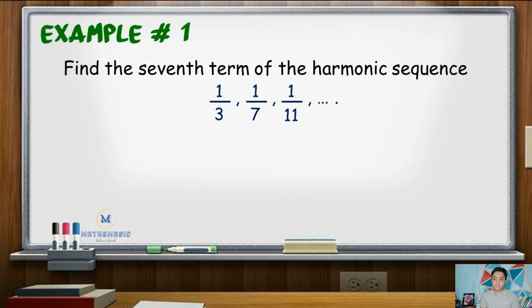This item can easily be solved by applying the concept of arithmetic sequence. First, we need to make sure that all the numerators are the same. In this example, they are all equal to 1. Next, take all denominators and express it as a sequence. The denominators of the first three terms are 3, 7, 11, and so on.